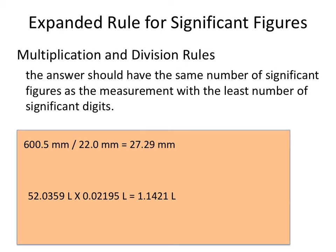Multiplication and division has a slightly different set of rules. The answer is always going to have the same number of significant figures as the measurement with the least significant digits — we're looking at sig figs, not places to the right of the decimal. So 600.5 has four sig figs, divided by 22.0 which has three sig figs. Our final answer is going to have three sig figs to match the one with the least significant digits. The two in the raw calculation rounds up to three because of the nine next to it, so our final answer is 27.3 millimeters.